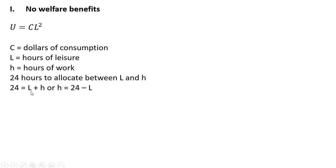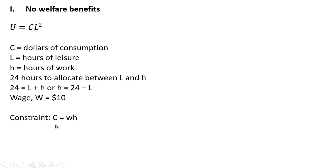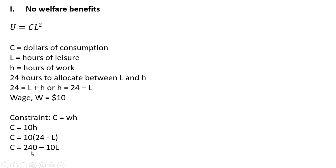So 24 will equal L plus H, or solving for H, hours of work will equal 24 minus hours of leisure. This person earns a wage of $10 if they work. So consumption will equal the wage times hours of work, where the wage is $10. Substituting in 24 minus L for H, and multiplying 10 times 24 and 10 times negative L, we have our budget constraint.